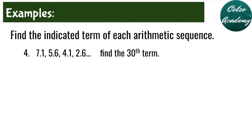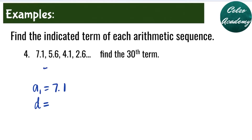Question number 4: given the arithmetic sequence 7.1, 5.6, 4.1, 2.6 and so on, find the 30th term. Our a sub 1 is 7.1, the first term. To calculate d, we subtract 5.6 minus 7.1, which equals negative 2.5. This means the pattern for this arithmetic sequence is subtracting 2.5 from the previous term to find the next term. So our d is negative 2.5.